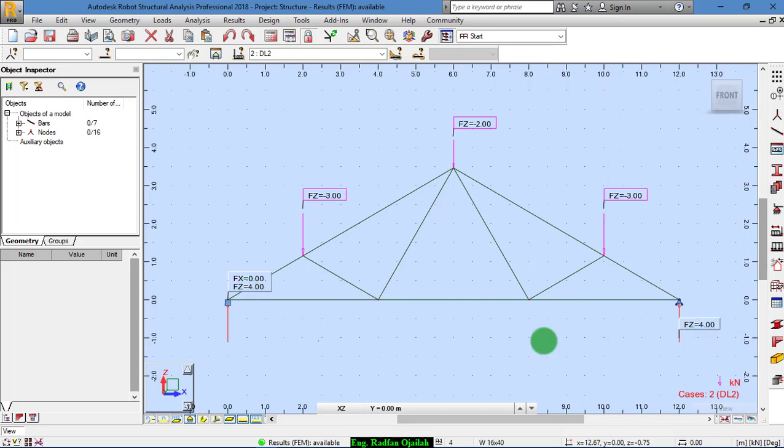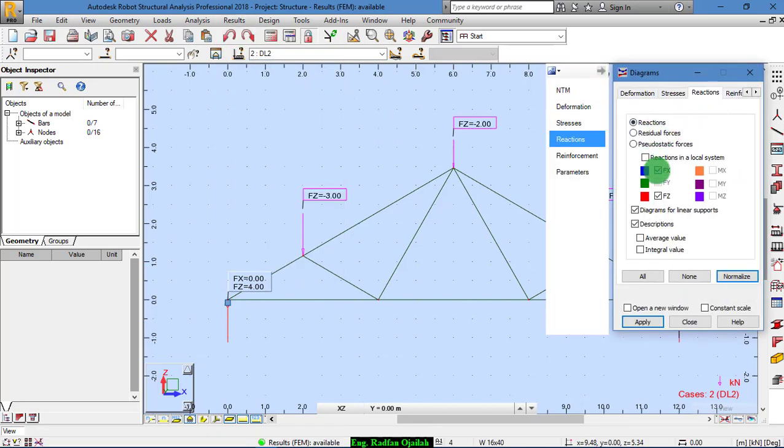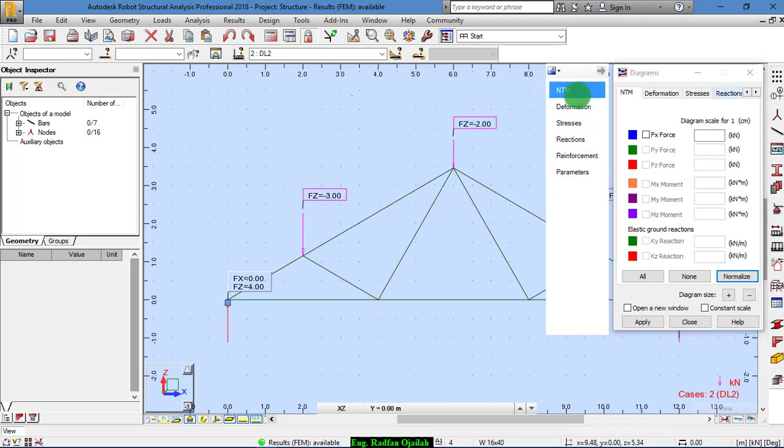Correct, we have 4 and 4 from here and from here. The next step is finding the forces in each member and specifying whether they were tension or compression. Diagram of bars, turn off the reactions, and then go to N, N-T-M.